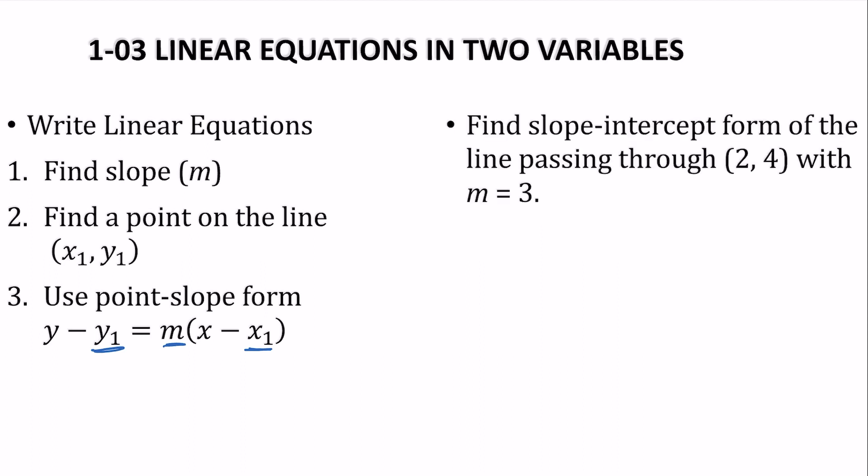So let's find the slope-intercept form of the line passing through this point with that slope. Well, I already know my slope, and I know my point, which will be x1, y1. So I can fill in my point-slope form. y1 is 4, slope is 3, x1 is 2.